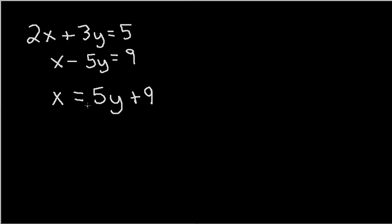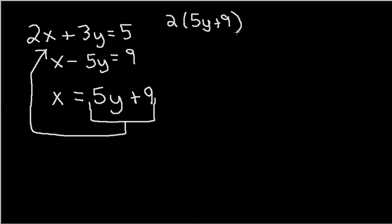Next step, since x is equal to 5y plus 9, take what you just solved for x and substitute that into the other equation for x, because x is the same as this expression. So I plug it in and solve for x. So now you're going to have 2 times 5y plus 9 plus 3y. I'm just writing down everything from that equation equals 5.